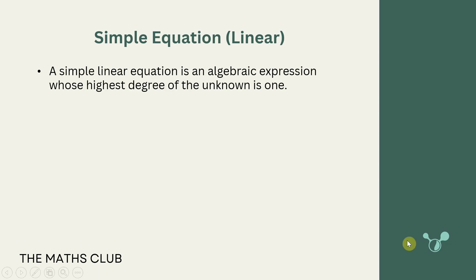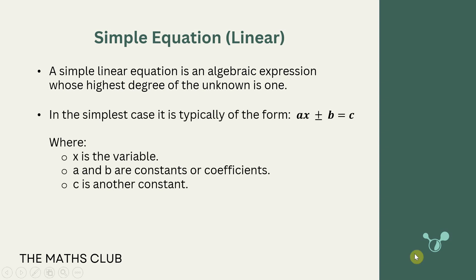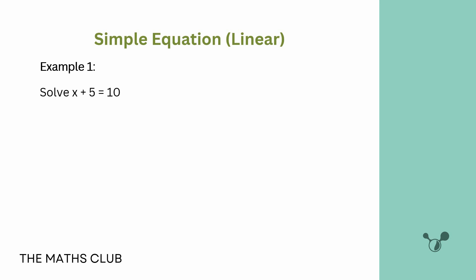We're looking at simple equations, also known as linear equations. A simple linear equation is an algebraic expression whose degree of the unknown is one. In the simplest case it takes the form ax plus b equals c, or ax minus b equals c, where a is a constant. The unknown is x raised to the power of one. If the highest power of the unknown x is one, you're dealing with a linear equation.